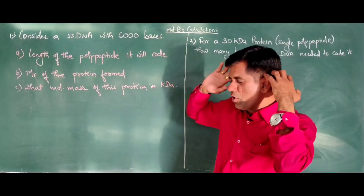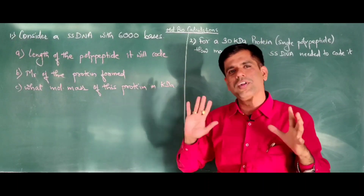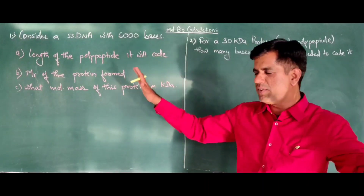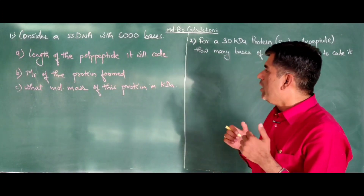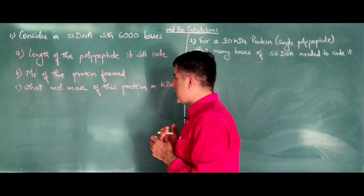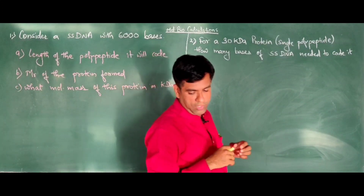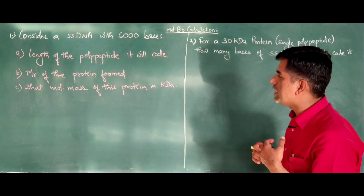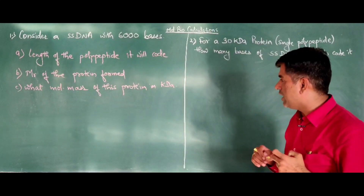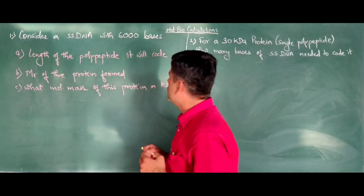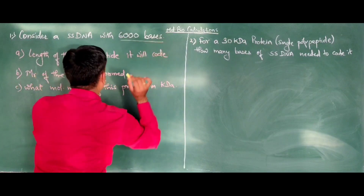Keeping aside all the details about introns, exons, splicing, start codons, and stop codons, broadly we'll see what would be the length of the polypeptide it codes for, the molecular weight of the protein formed from this, and the molecular mass of this protein in kilodaltons. Let's go one by one, starting with the 6000 bases.